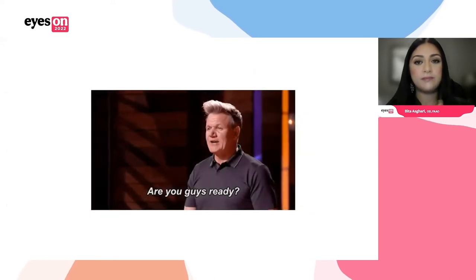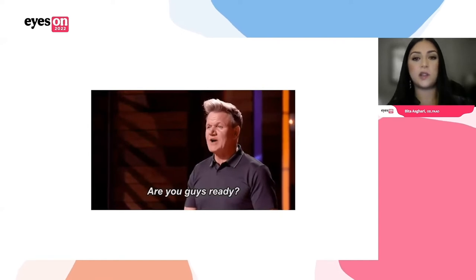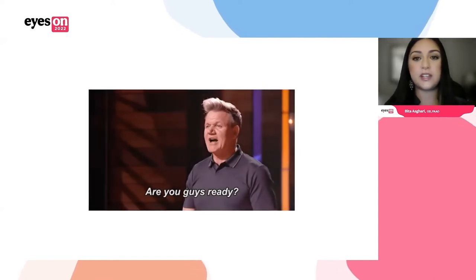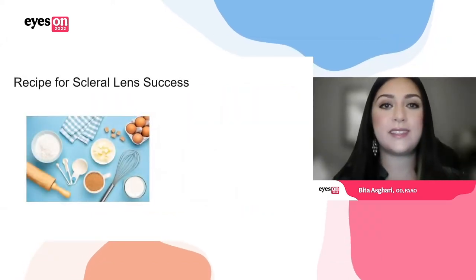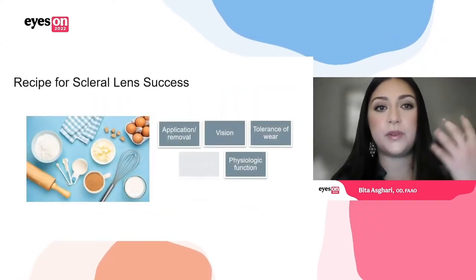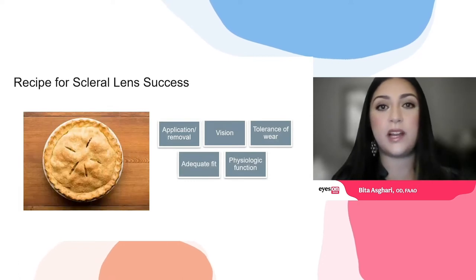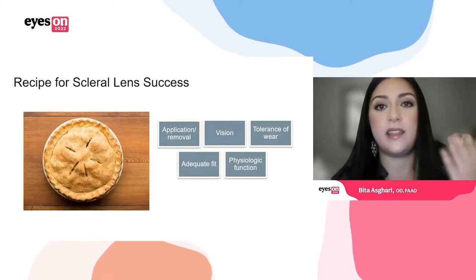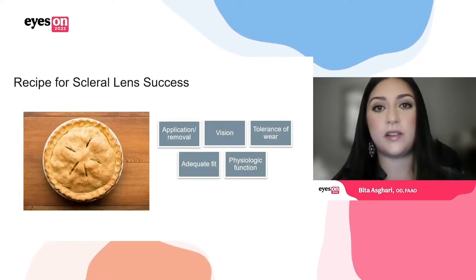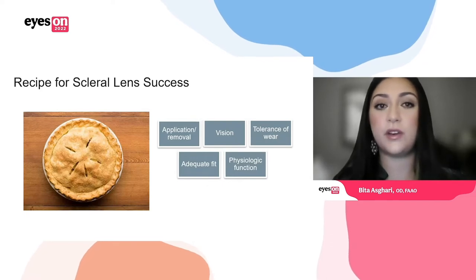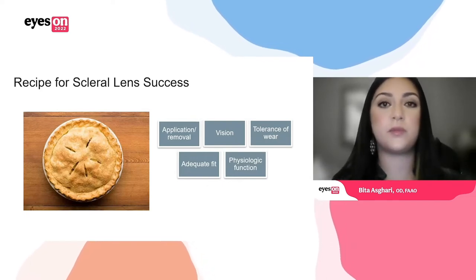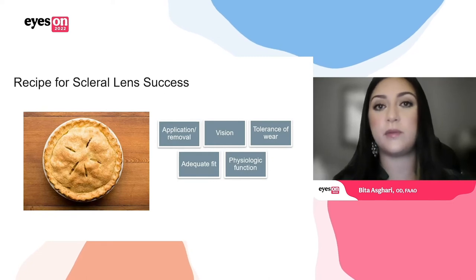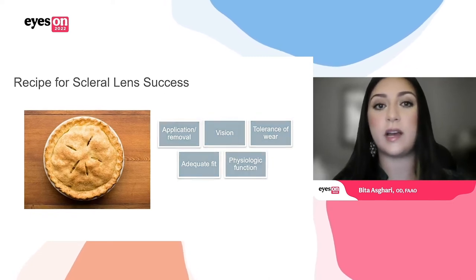Are you ready to fit all these patients with all these wonderful indications? If you are, here's what you need to be successful: the patient needs to be able to apply and remove, they need to be able to see, they have to be able to tolerate the lens, the fit has to look good and adequate, and the physiologic function needs to be appropriate — which we'll talk about in more detail in upcoming slides.